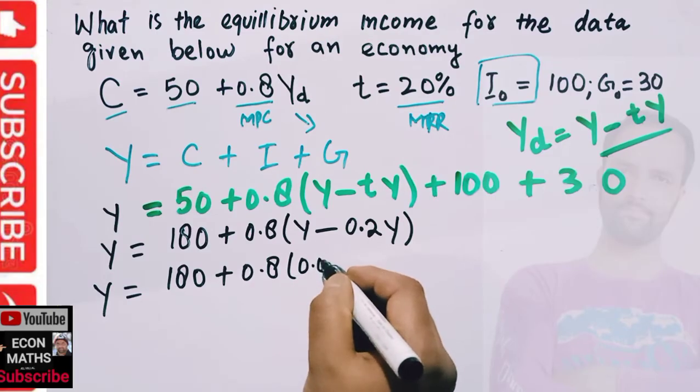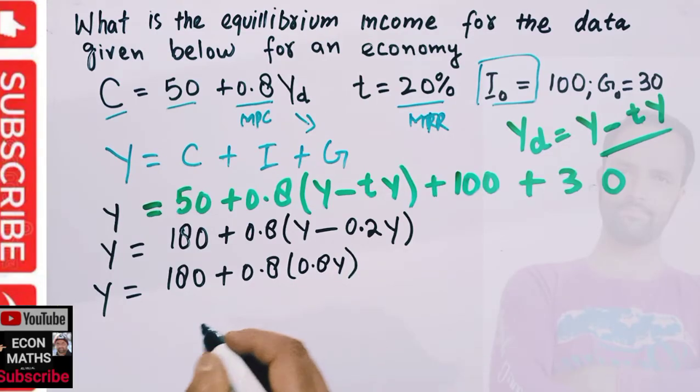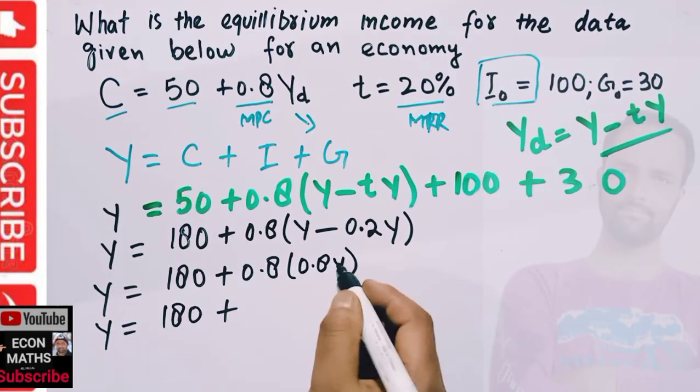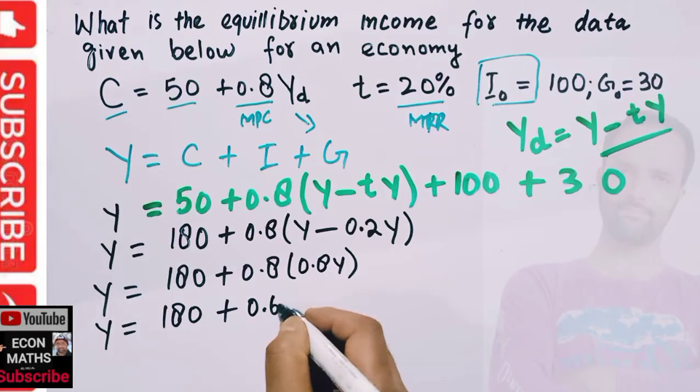Or Y = 180 + 0.8 × 0.8Y. 0.8 times 0.8 is 0.64Y.